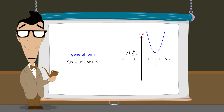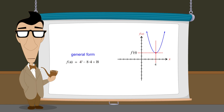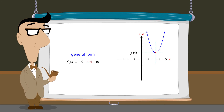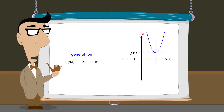The vertex's vertical coordinate is the value of the quadratic function for that value of x. We can calculate that value by substituting 4 for x in the quadratic equation, which gives us 16 minus 32 plus 18, which is equal to 2.